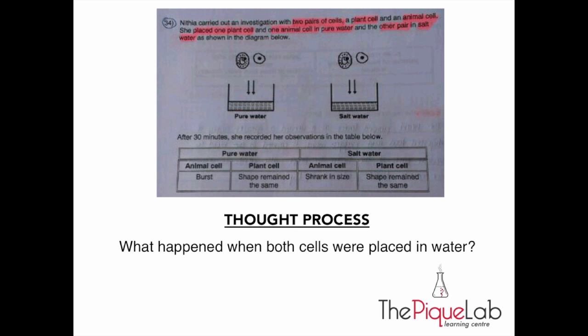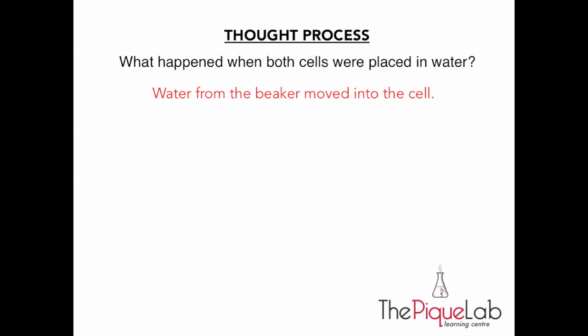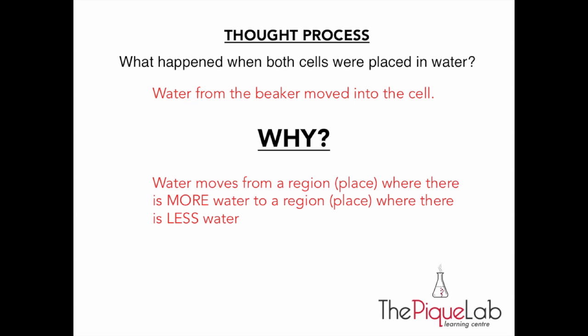What happened when both cells were placed in water? So, the answer is, water from the beaker moved into the cell. Once you have understood that, the bigger question we want to ask is, why? And the reason is, water moves from a region where there is more water to a region where there is less water.